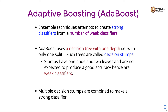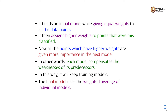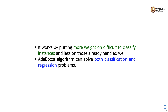Multiple decision stumps are combined to make a strong classifier in AdaBoost. It builds an initial model while giving equal weights to all data points. Then as the boosting rounds progress it assigns higher weights to points that were misclassified in the previous round. All points with higher weights are given more importance in the next model — in other words each model compensates for the weakness of its predecessors. The final model uses the weighted average of all individual models.